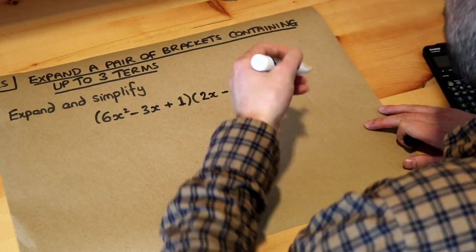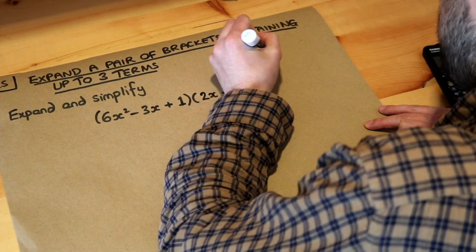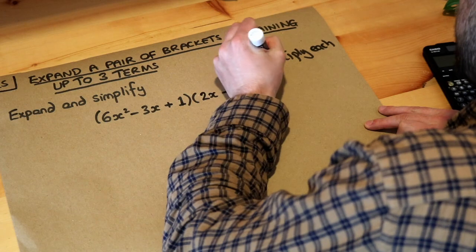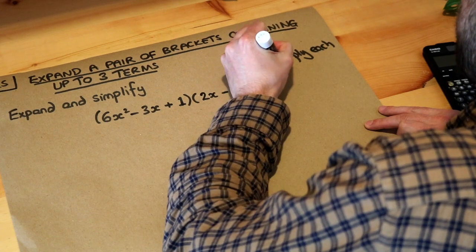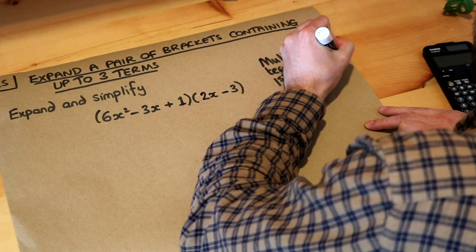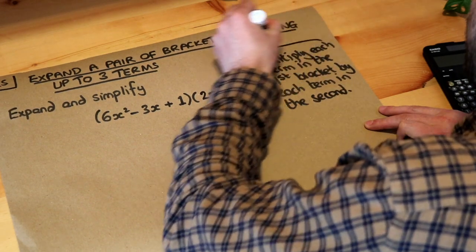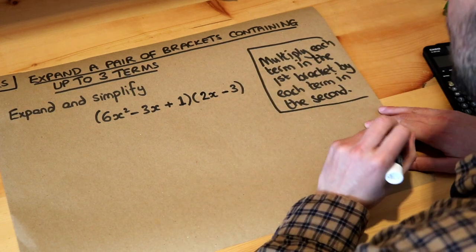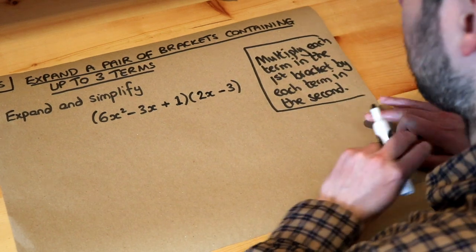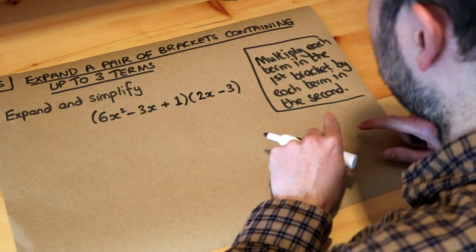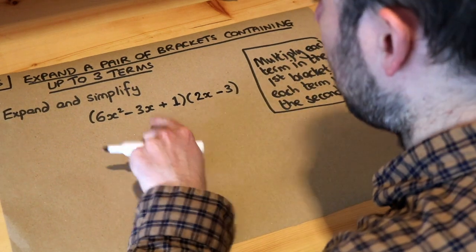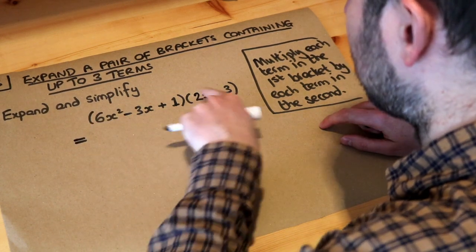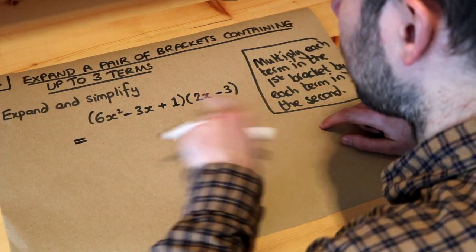The principle for expanding brackets is this: multiply each term in the first bracket by each term in the second. That is the key principle for expanding two brackets, and we're going to apply that principle here.